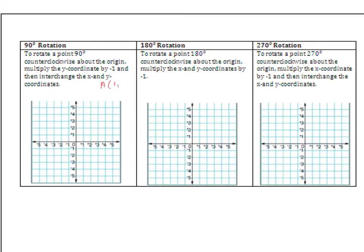Plot three points: A at (1, 1), B at (3, 1), and C at (1, 4) — label and connect them. To rotate a point 90 degrees counterclockwise about the origin, multiply the y-coordinate by negative 1, then interchange the x and y coordinates. So for A: take y = 1, multiply by negative 1, move to the front — A prime becomes (negative 1, 1). For B prime: y = 1, multiply by negative 1, interchange — giving (negative 1, 3). For C prime: y = 4, multiply by negative 1, move to front — C prime is (negative 4, 1).